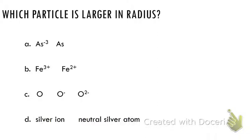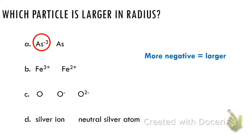Looking at the practice problems — which particle is larger in radius? Larger means I'm looking for the one that is more negative. For the first one, that's pretty easy. For my second one, it's all positive, so none of them are negative. Remember: more negative means less positive. So which of these ions is less positive? That's Fe²⁺ instead of Fe³⁺. That's what we need to connect here.